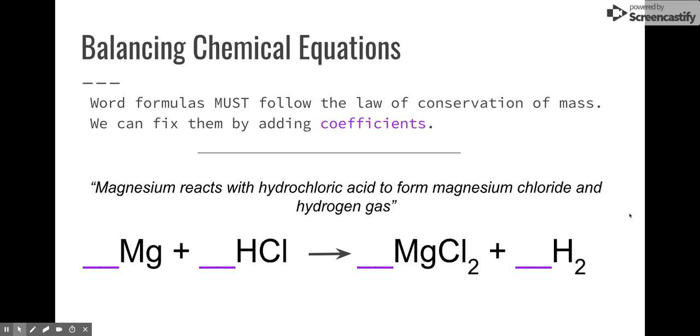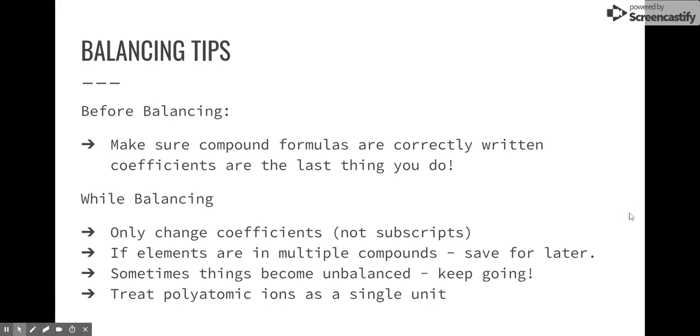We have to realize that the law of conservation of mass must be true. So how do we do that? Well, before we do that, we're going to do something called balancing your reaction. Now before we balance, I want to give you a tip. Make sure your compound formulas are written correctly. You cannot balance a reaction unless you know that each of the compounds, ionic, covalent, polyatomics, anything that is a diatomic, all those things have to be correctly written before you balance. Because if you don't, then things aren't going to work out that well.